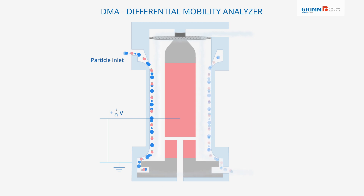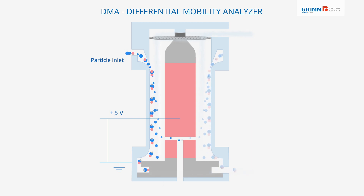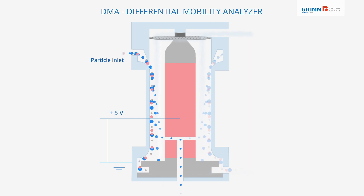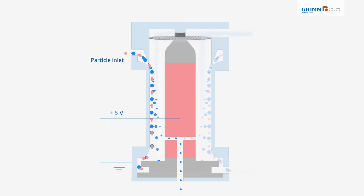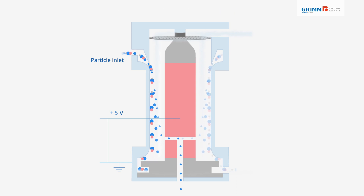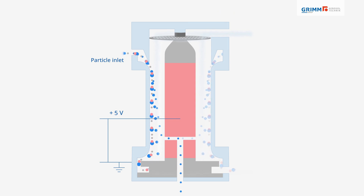When a voltage is applied, negatively charged particles are attracted to the center, but only particles of a certain electrical mobility will reach the exit.